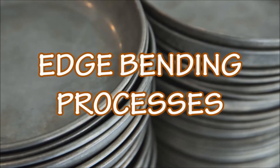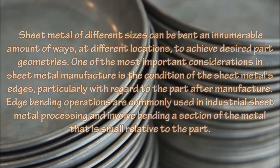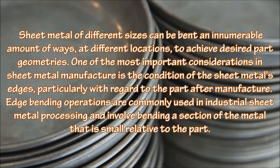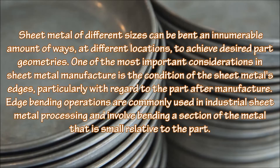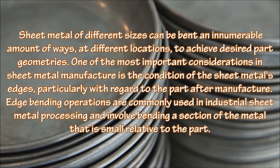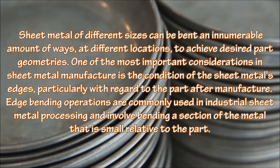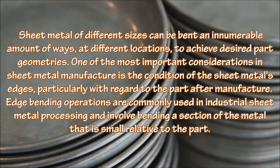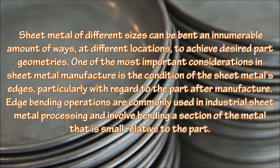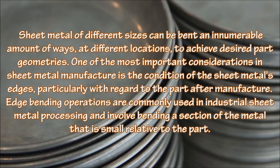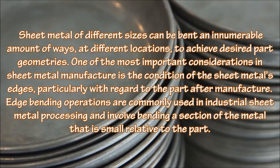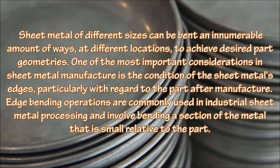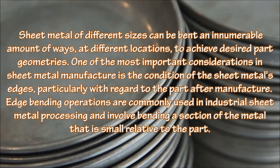In edge bending processes, sheet metal of different sizes can be bent in innumerable ways at different locations to achieve desired part geometries. One of the most important considerations in sheet metal manufacture is the condition of the sheet metal's edges, particularly with regard to the part after manufacture. Edge bending operations are commonly used in industrial sheet metal processing.